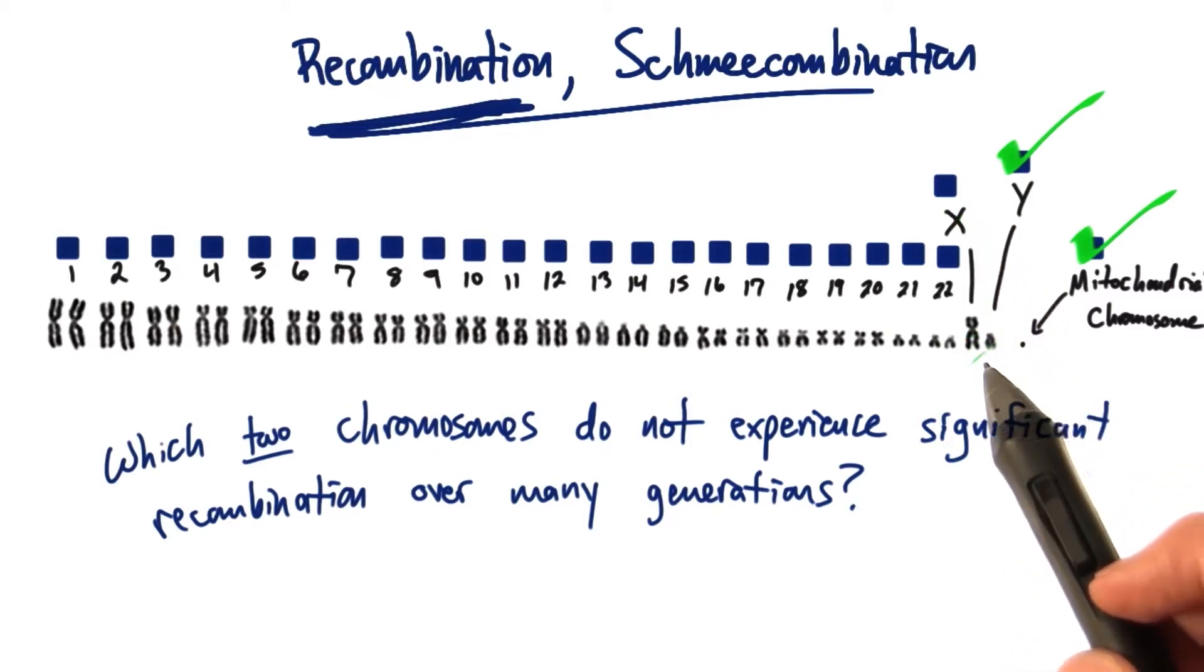In the X and Y combination, they largely don't have a lot of recombination. There are a couple of regions that can, but very few.